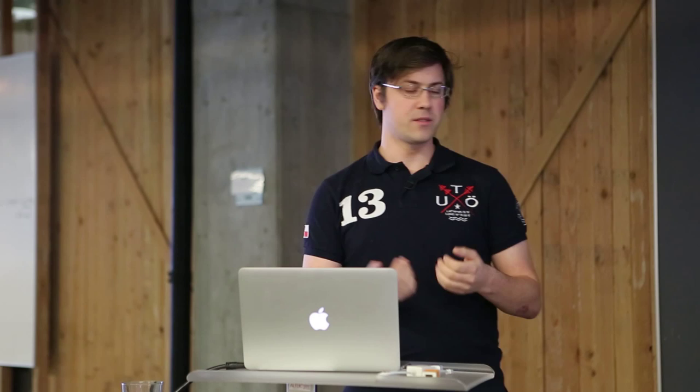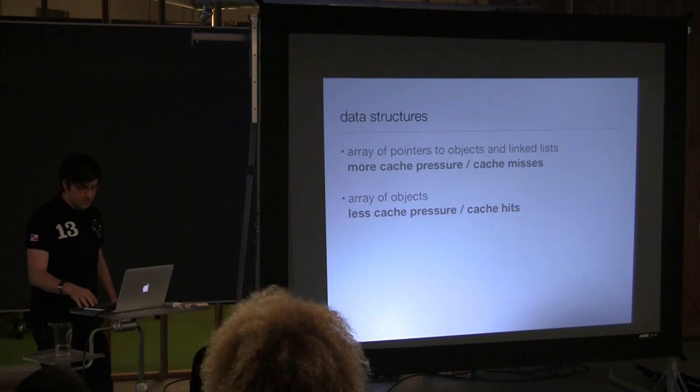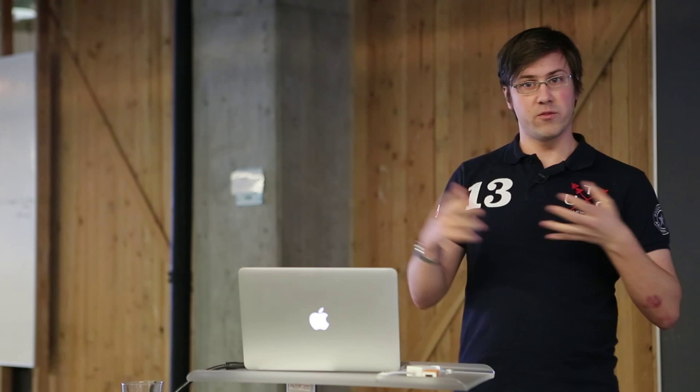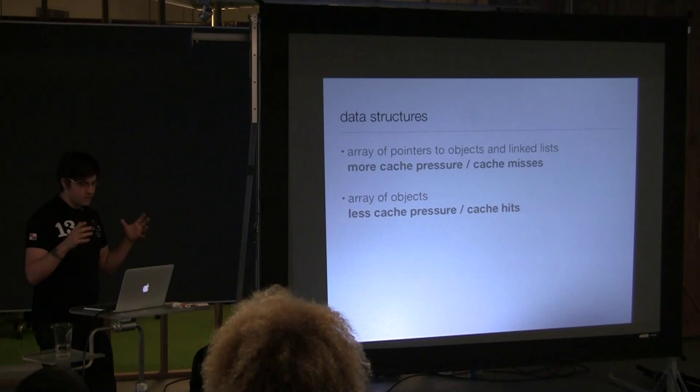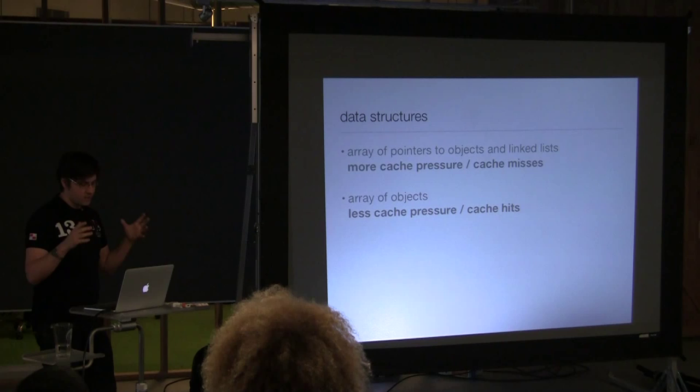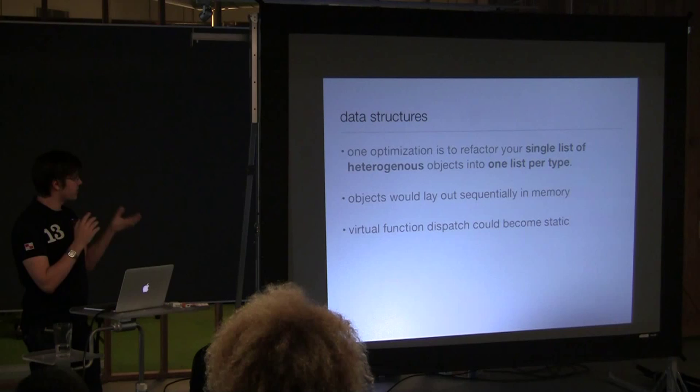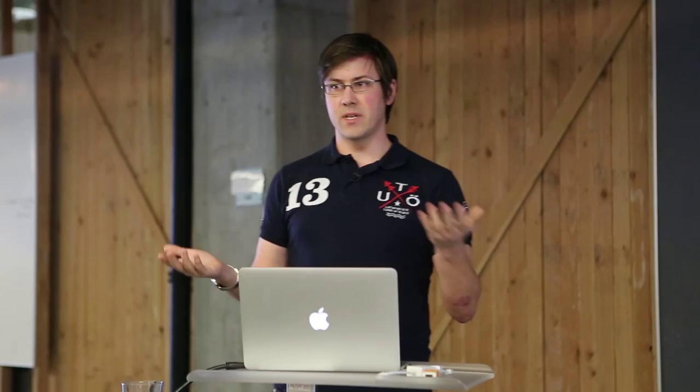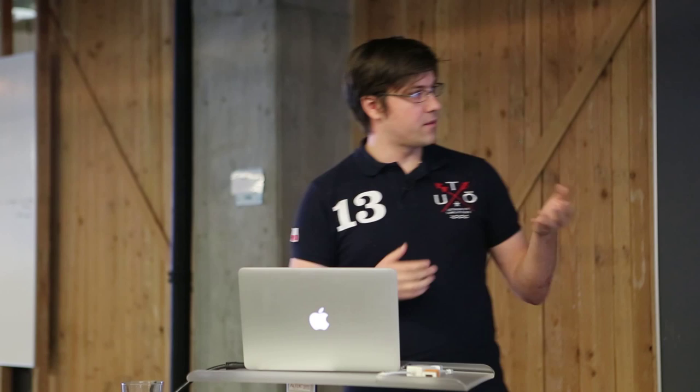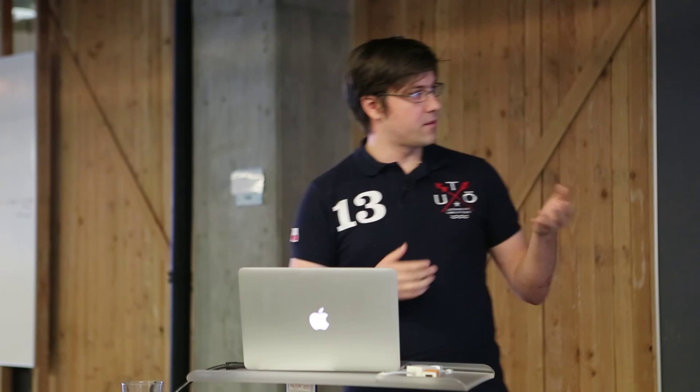An alternative, which might be a little bit crazy, would be to have an array of objects of the same kind. So instead of having a single list of heterogeneous objects, you can have one list per type. So if you don't have that many types, that might actually be feasible. In the case of peer connections, you would have one array of BitTorrent peer connections and another array of web seed connections. One advantage is that these objects then would, not only would you save a cache miss when you need to dereference the pointer, but they would also be laid out sequentially in memory next to each other. So when you need to do operations on all of them, it would be a lot quicker. Also, you would also save on the virtual function dispatch.